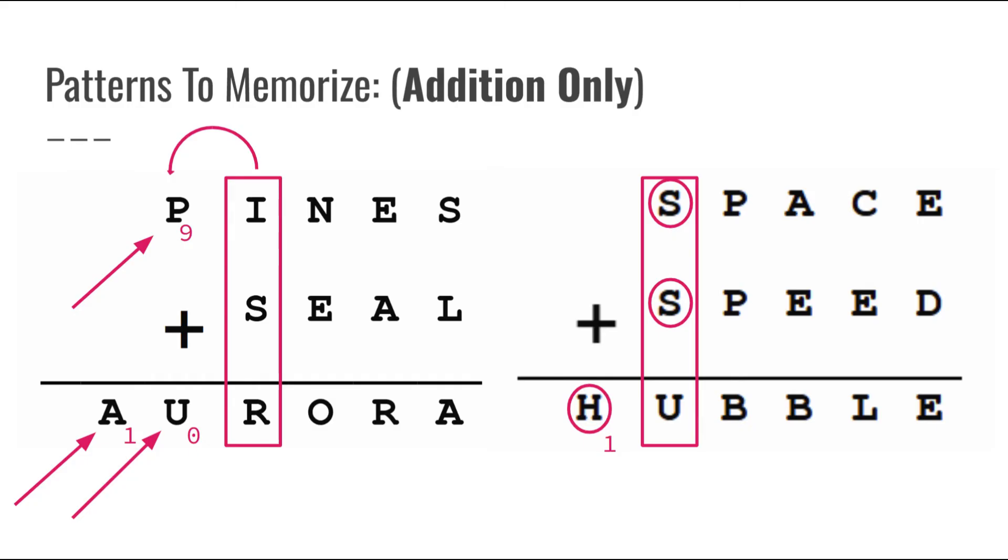So this doesn't just apply for the bottom row. Now this applies for any single number that you see in a cryptarithm and if it starts with a 0 then you have either made a mistake or the test makers have made a mistake. So if a number starts with 0, then it's just not a number. Make sure to remember that before you start any cryptarithm you do.